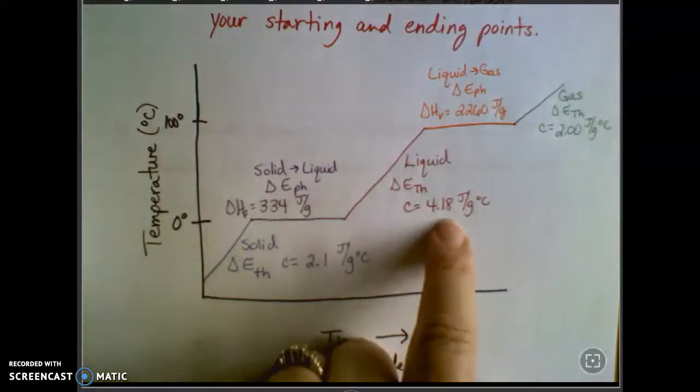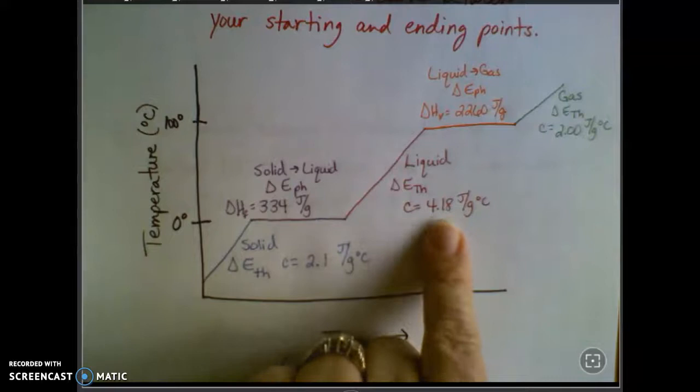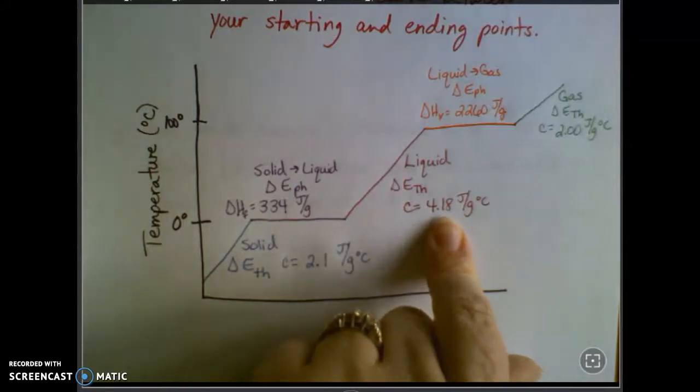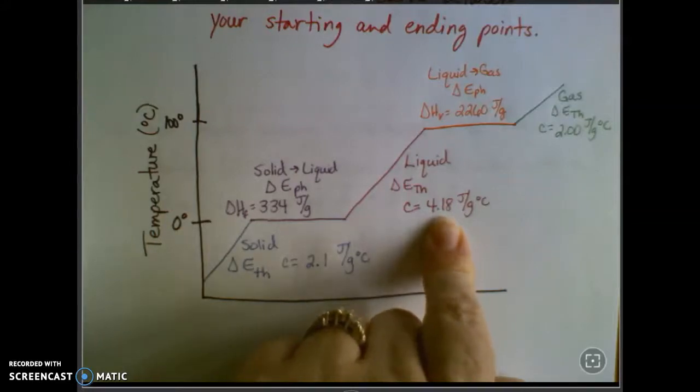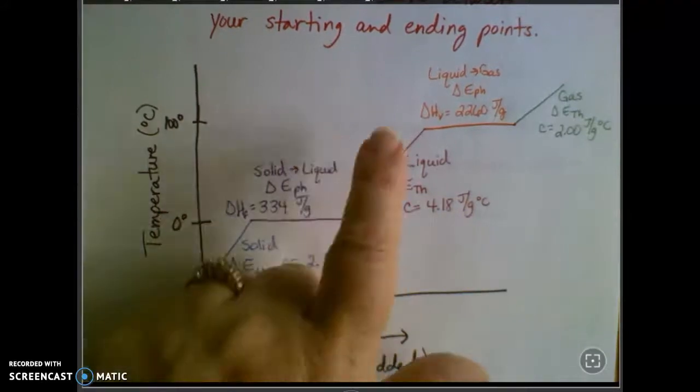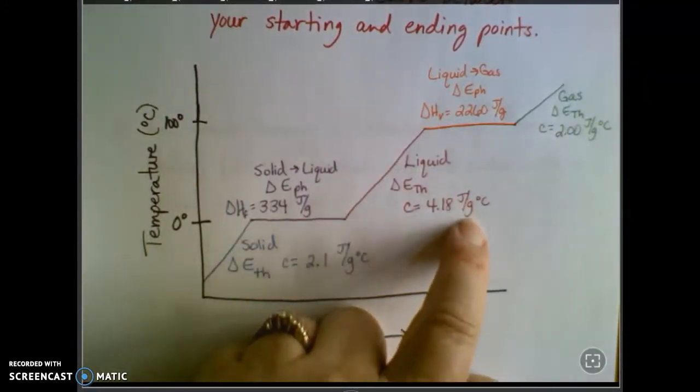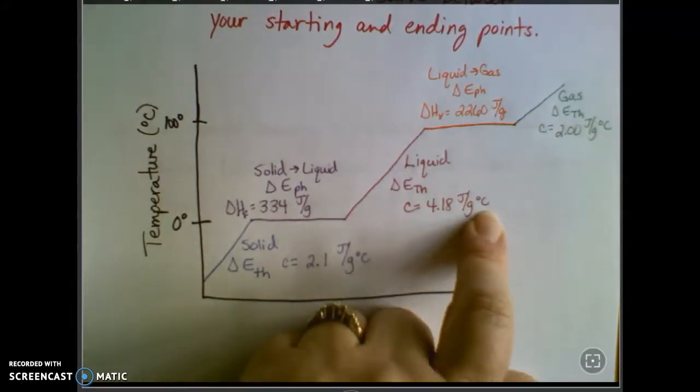Notice for the liquid, the number is almost twice what it is for the solid. It takes a lot more energy to heat up or to cool down liquid water. That's why it's such a good insulator. It's used as a coolant lots of times because it can absorb a lot of energy without changing temperature a whole lot. So 4.18 joules for every gram of water that I'm heating up by one degree Celsius.